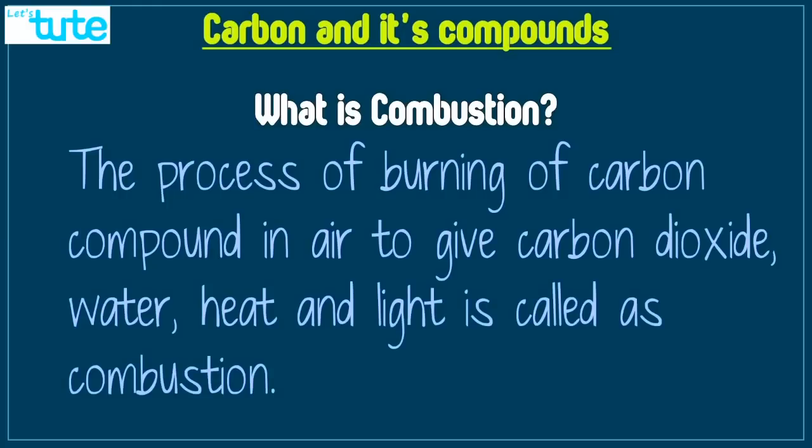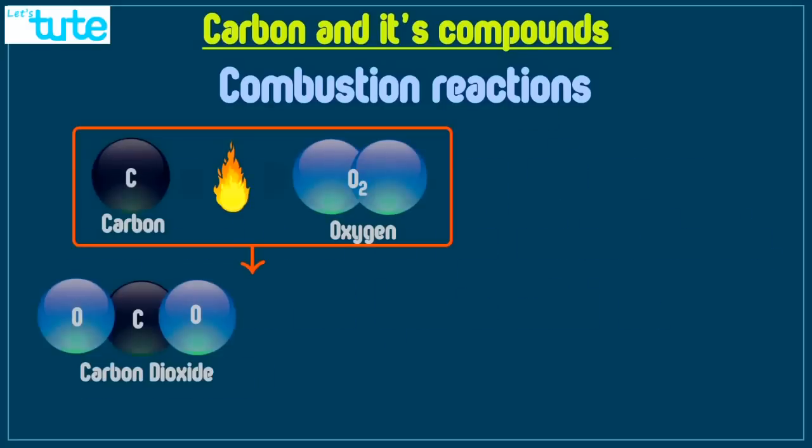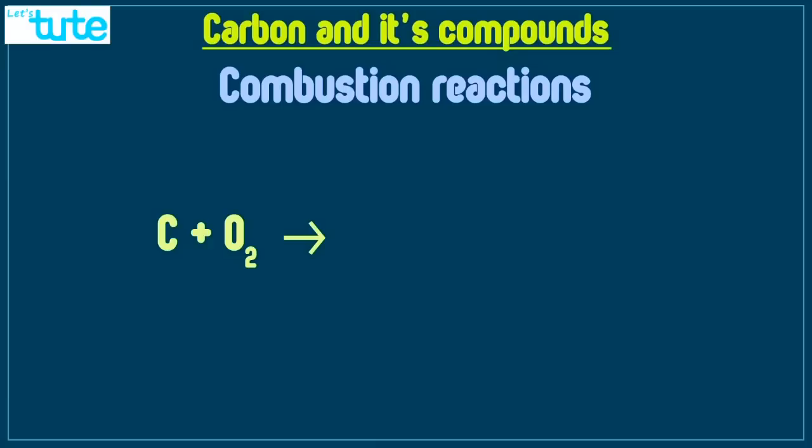Let us understand this process better with the help of few examples. The first example is carbon when burnt in oxygen gives us carbon dioxide plus heat and light. So we can represent this reaction as C plus O2 which gives us CO2 plus heat and light.